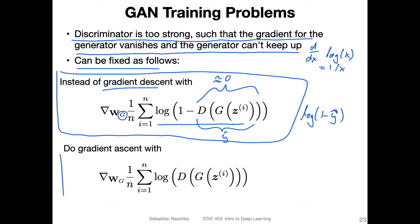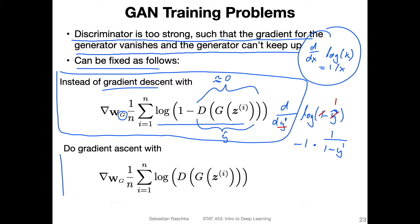Using the chain rule, the outer derivative of log(1 − ŷ) is 1/(1 − ŷ). So the full derivative is −1 × 1/(1 − ŷ), which equals −1/(1 − ŷ). If ŷ is close to zero, the derivative is approximately −1, which is okay but not a particularly strong gradient signal for training the generator in the beginning.